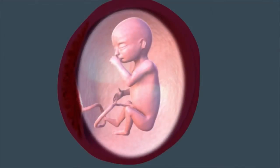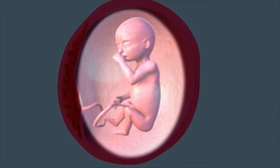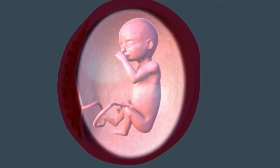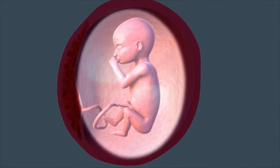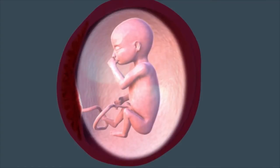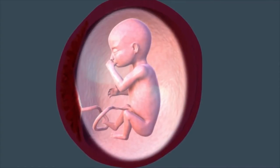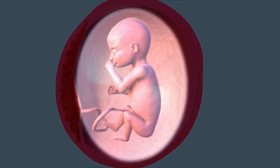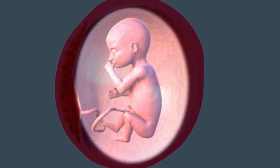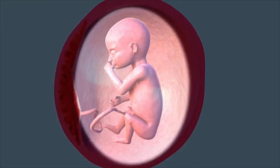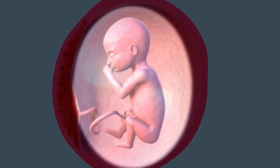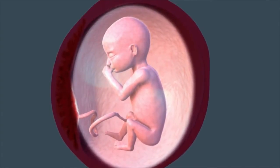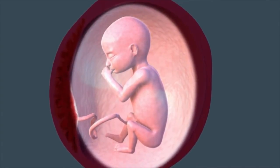By week 14, your baby is the size of a nectarine. All of his internal organs form during the first trimester, and they will continue to mature during the second and third trimesters to get him ready for life outside of the womb.